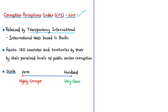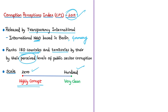The Corruption Perceptions Index is released annually by Transparency International, an international non-governmental organization based in Berlin, Germany. Their vision is a world free of corruption. To achieve this, Transparency International works together with governments, businesses, and citizens to stop the abuse of power, bribery, and secret deals. The CPI 2019 ranks 180 countries and territories by their perceived levels of public sector corruption according to experts and business people, using a scale of 0 to 100, where 0 is highly corrupt and 100 is very clean.